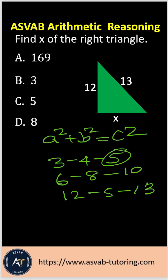In this case, thirteen is the hypotenuse here, so that means you have a twelve-five-thirteen triangle. What is the missing side here? The missing side is x equals five, so the correct answer is option C.